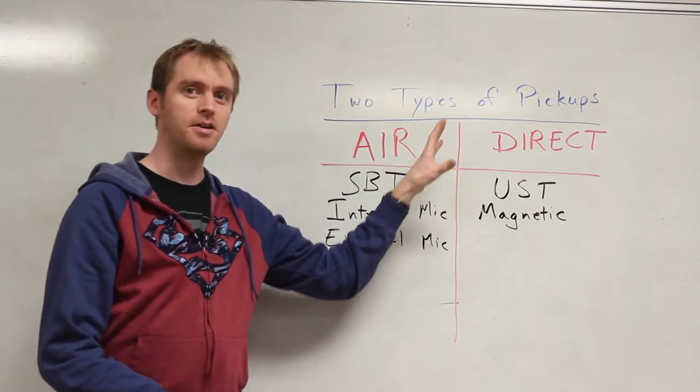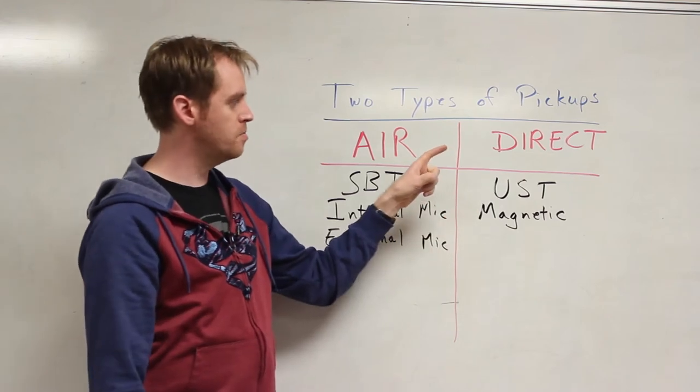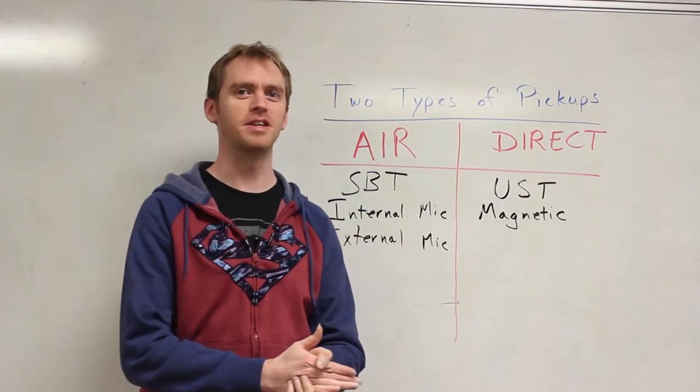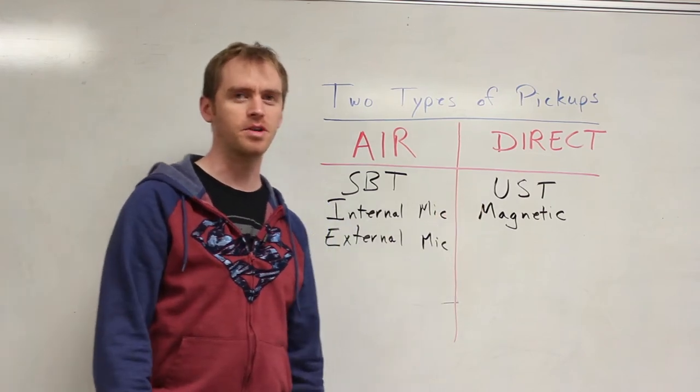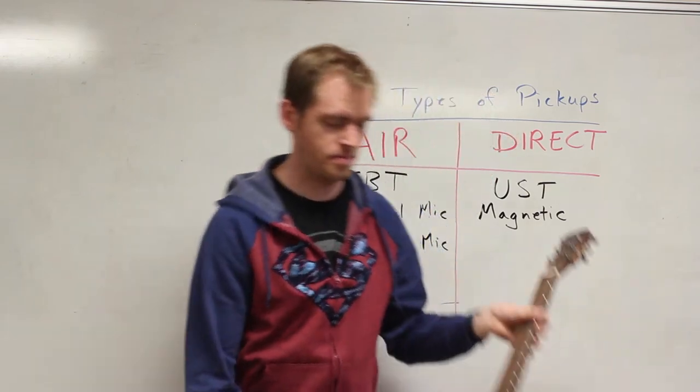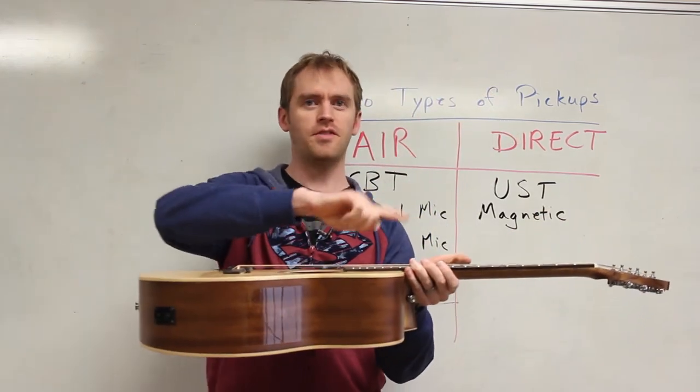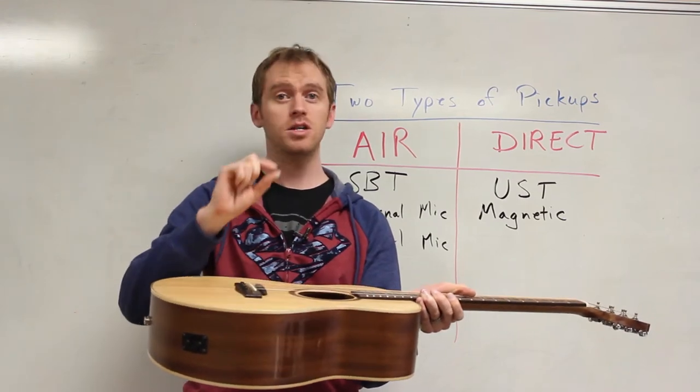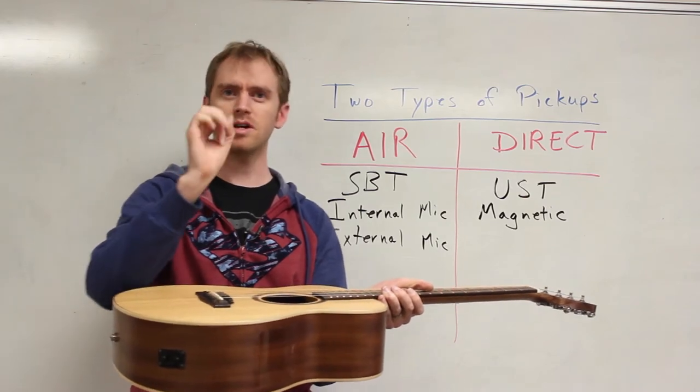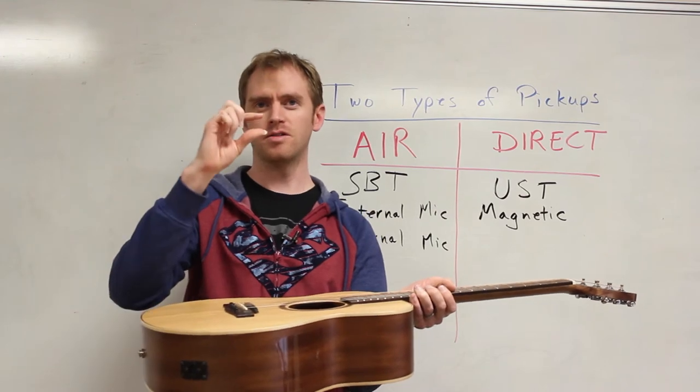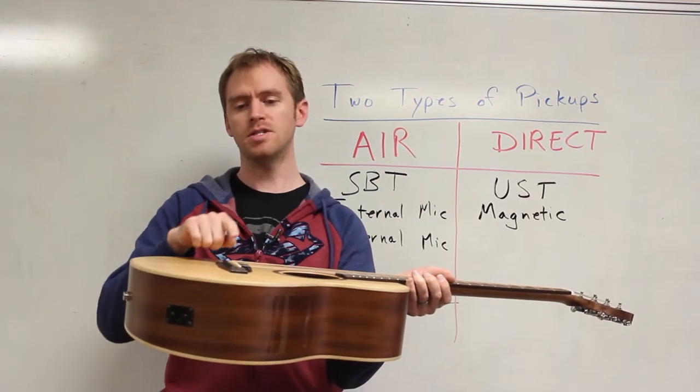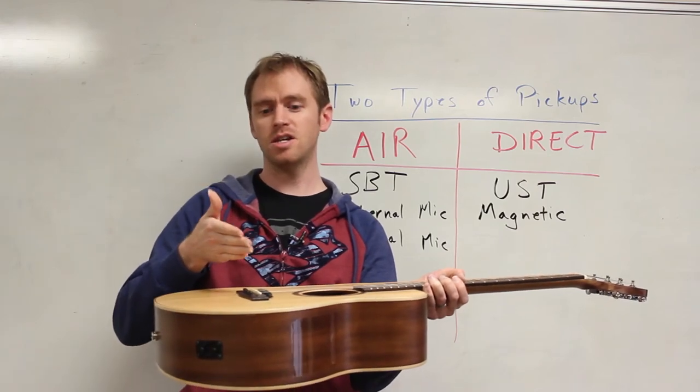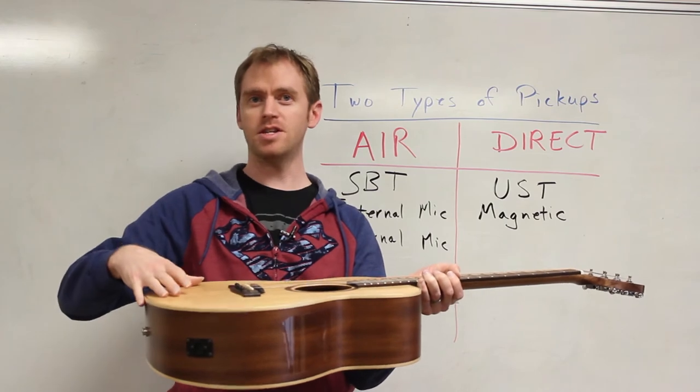Moving on to the direct-type pickups, there's a problem with the under-saddle transducers. And these are probably, it seems like any guitar that comes with a pickup in it pretty much always has an under-saddle pickup. And the problem is, the way the guitar works, the string vibrates, comes down to the bridge, and you want that bridge to be vibrating. If you've got a pickup right under that saddle, especially if it's the tubular coax-type ones, and they're kind of spongy almost, what happens is it hits the saddle, vibrates down, and then it hits that pickup, and that pickup absorbs a lot of the vibrations. And so those vibrations don't transfer to the top of the guitar, and you lose resonance.